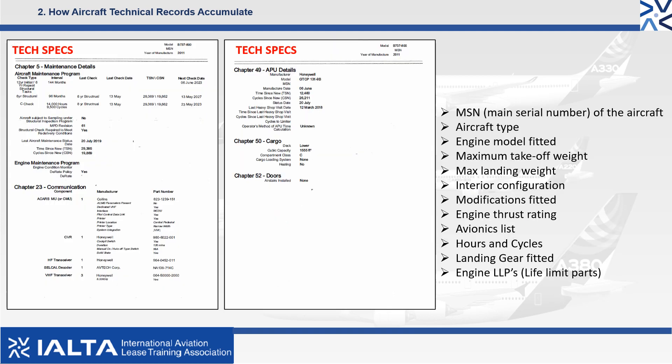Technical specifications would include various information about the aircraft. An example of this information would be the manufacturer's serial number or MSN, the aircraft type, the engine model fitted, the maximum takeoff and landing weights, interior configuration, any fitted modifications, the engine thrust ratings, avionics list, the aircraft's hours and cycles, the landing gear fitted, and engine LLPs or life limited parts.